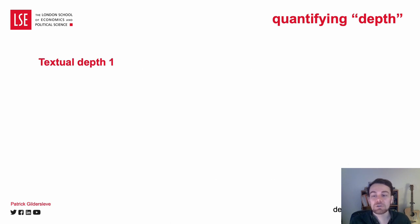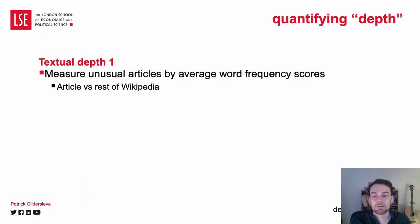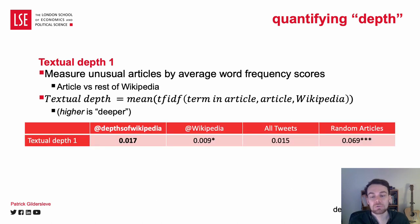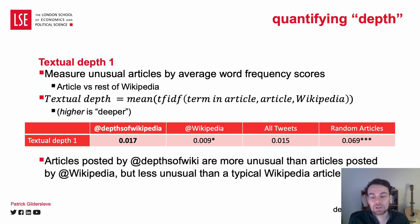Finally, I consider how unusual the text of the linked articles are. If an article uses many unusual words that are not used often across Wikipedia, its average term frequency inverse document frequency score will be relatively high. Here, we find that Depths of Wikipedia articles are more unusual than those posted by Wikipedia, but less unusual than randomly selected Wikipedia articles. Overall, content from Depths of Wikipedia is more unusual than what most users are exposed to, but there are many more articles in the Depths that have not yet been discovered.